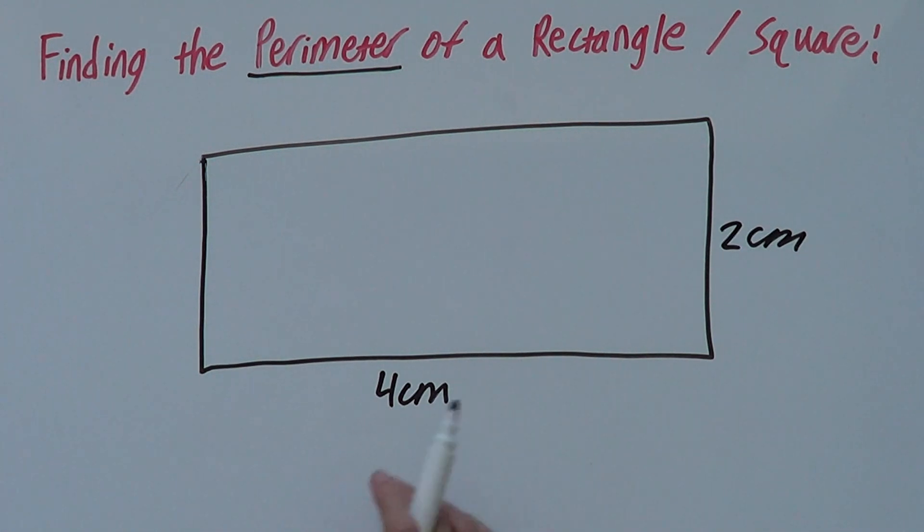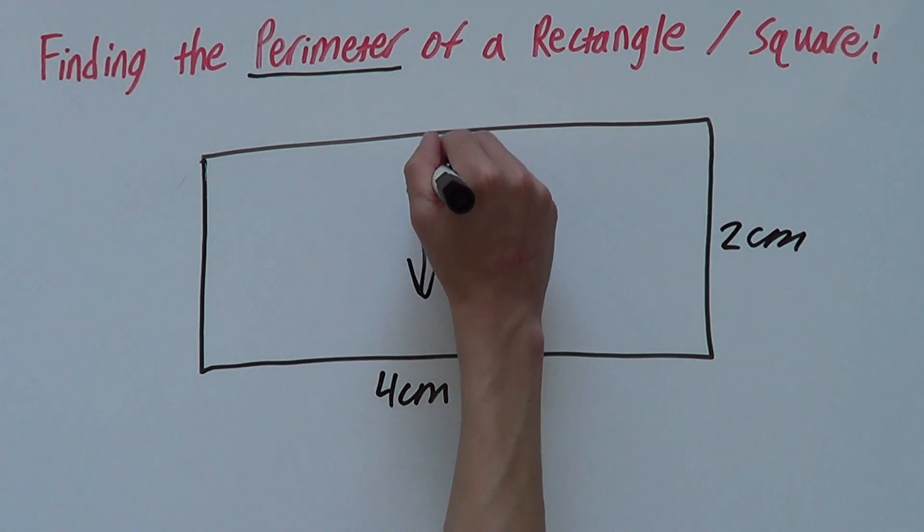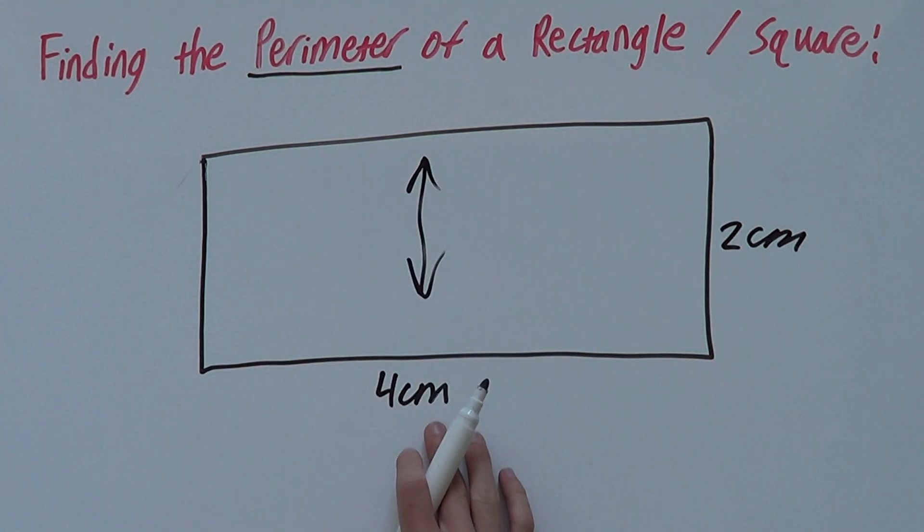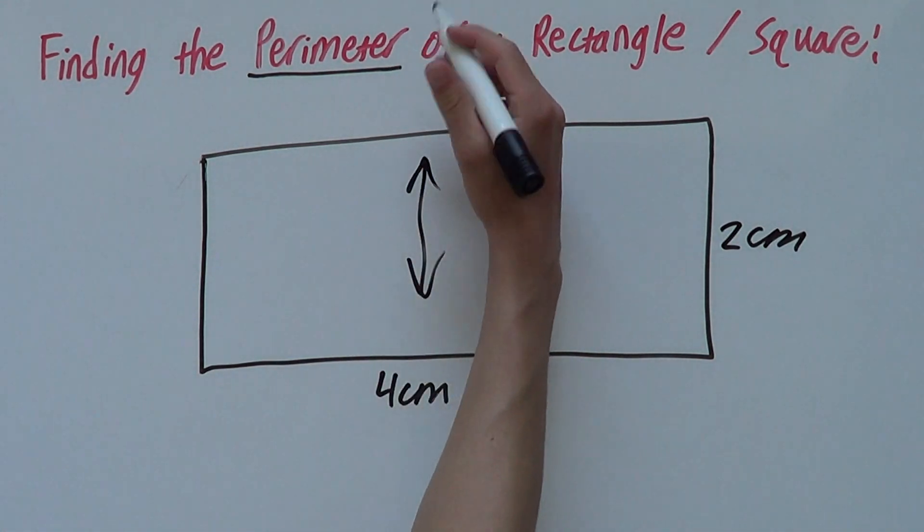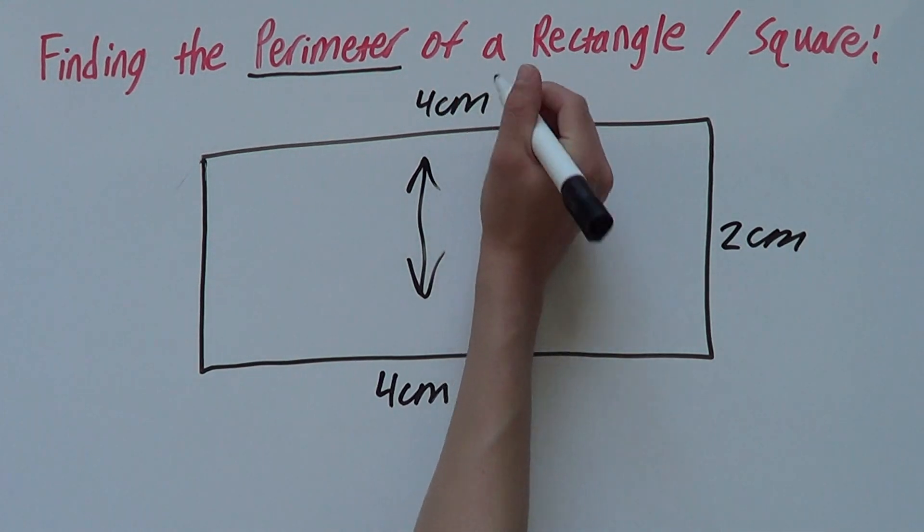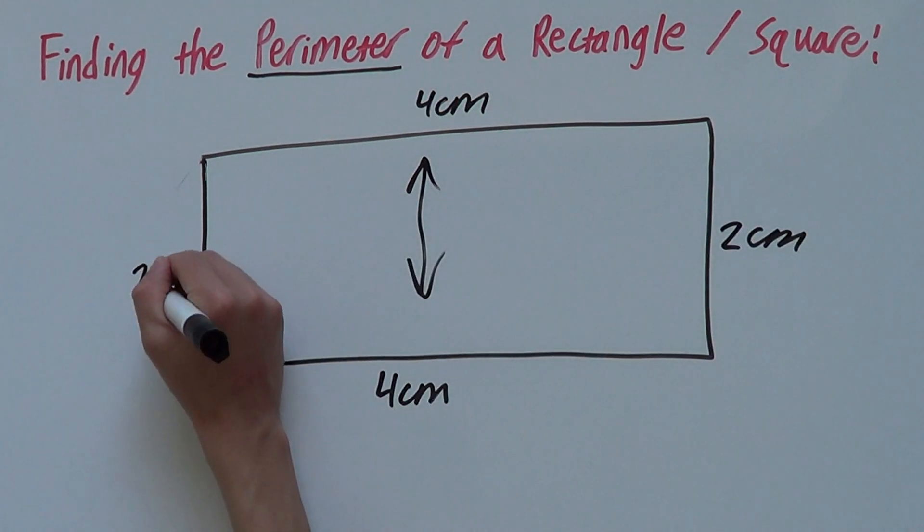Now, since this is a rectangle, its opposite sides are equal. So if this side is 4 centimeters, we know this side is also 4 centimeters. And since this is 2, we know this is 2 centimeters.